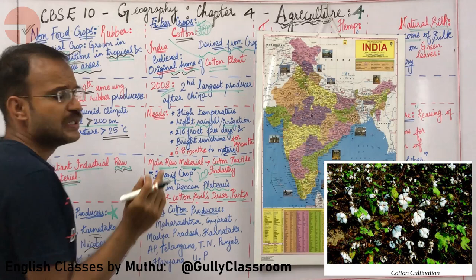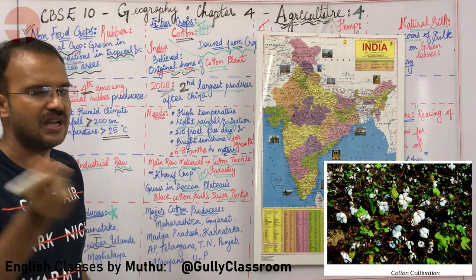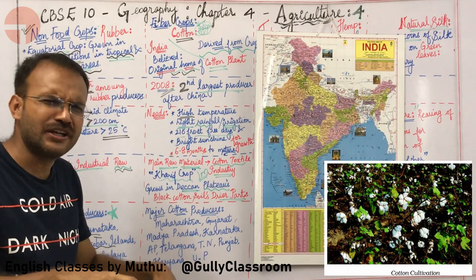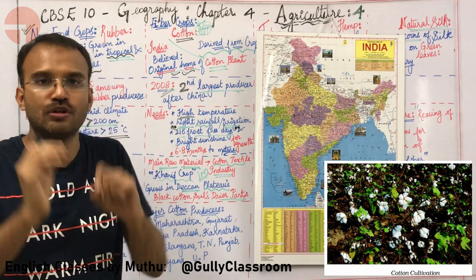What are the growing needs of cotton? Cotton needs high temperature, light rainfall or irrigation, 210 frost-free days, and bright sunshine for growth.